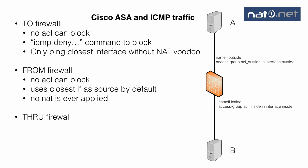Traffic through the firewall is handled like all other transit traffic, meaning you need to open the access list to allow transit ICMP. If you ping from host B on the inside to host A on the outside and you have an inbound access list on the inside interface, you need to open for ICMP traffic in the inside ACL.